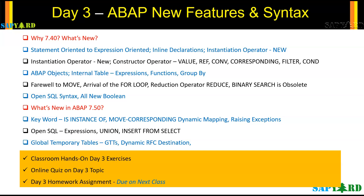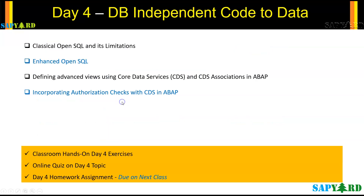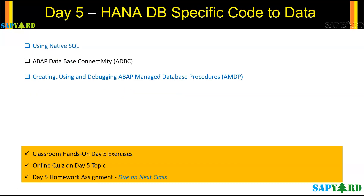ABAP programming has evolved in leaps and bounds, so we will learn the new syntaxes of ABAP 7.4 and ABAP 7.5 — one of the most popular topics from our previous batch. We will then move to the database-independent code-to-data technique, covering enhanced SQL, CDS, and access control in ABAP CDS. We will also check HANA database-specific code-to-data techniques, which include native SQL, ADBC, and AMDP.